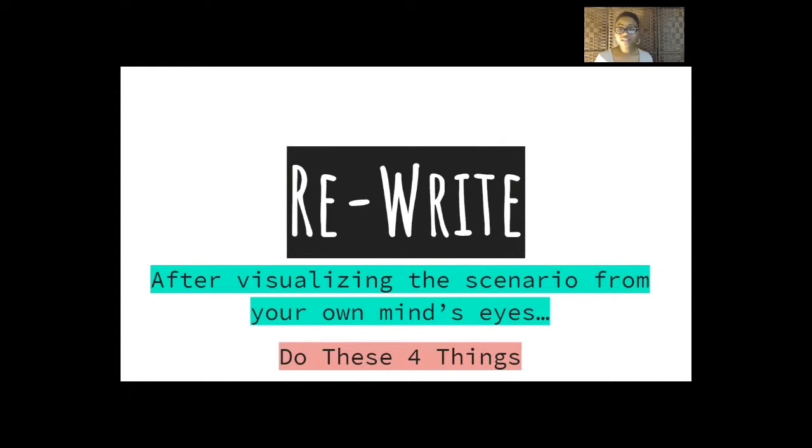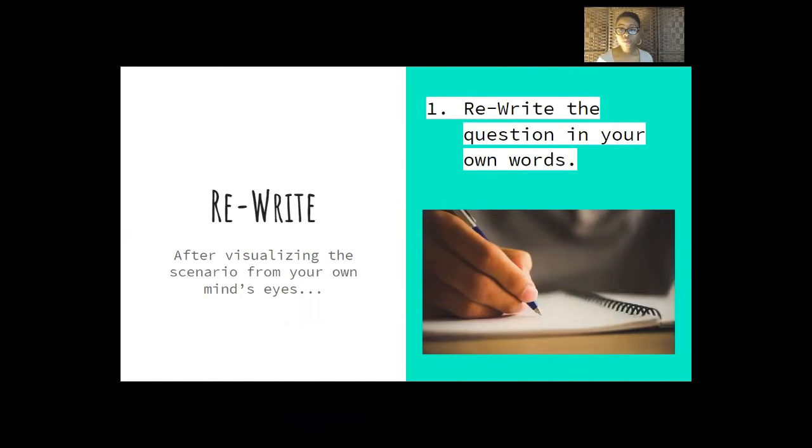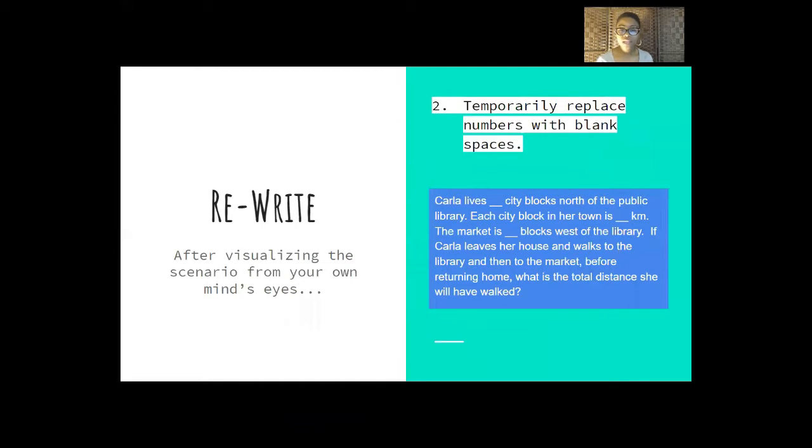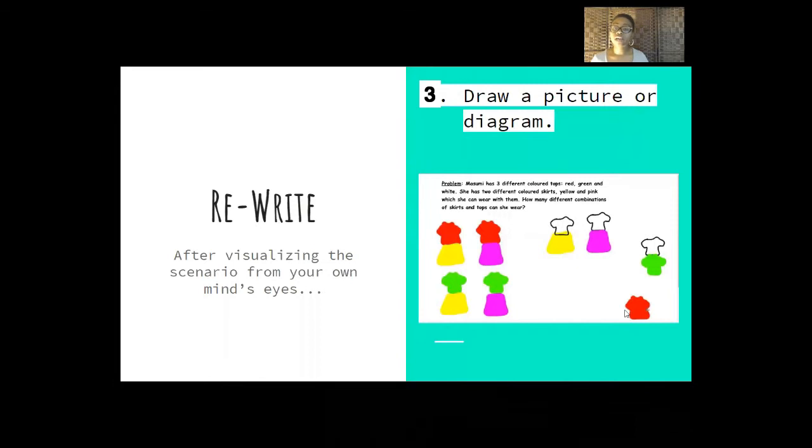Then you're going to rewrite the whole problem. After visualizing the scenario from your own mind's eye, you're going to do these four things. You're going to rewrite the question in your own words. That's important because that contributes to it becoming your own problem. Then you're going to temporarily replace the numbers with blank spaces. I want you to really focus on what the situation is instead of trying to jump to doing the math first. Because that can get you confused on what to do because you haven't gotten all the information yet.